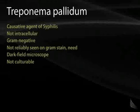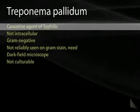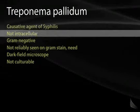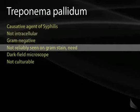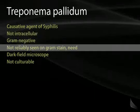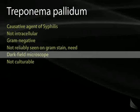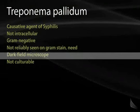The most nefarious spirochete is Treponema pallidum, the causative agent of syphilis. It's not intracellular, it's gram-negative, and it's not reliably seen on gram stain, but with dark field microscopy you can see it moving around. It is not culturable.